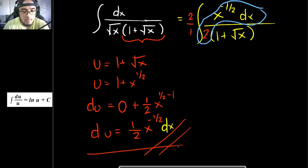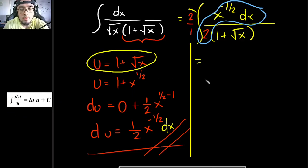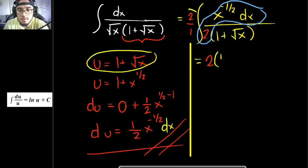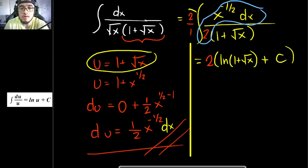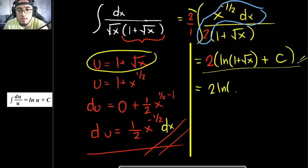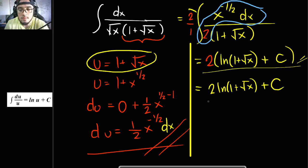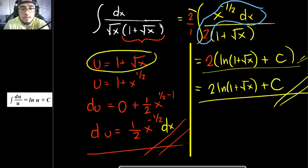Using the logarithm formula, the answer is 2 times the natural logarithm of u, where u equals 1 plus the square root of x, plus c. Simplifying, this is 2 ln of 1 plus the square root of x plus c, since 2 times c is still a constant. This is the final answer for this particular problem.